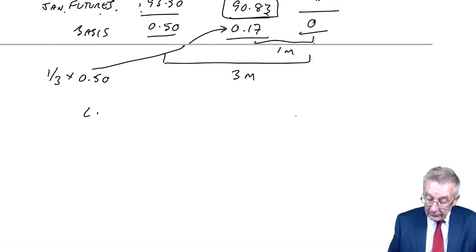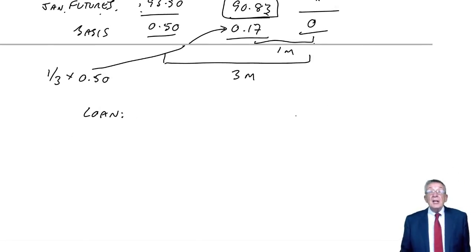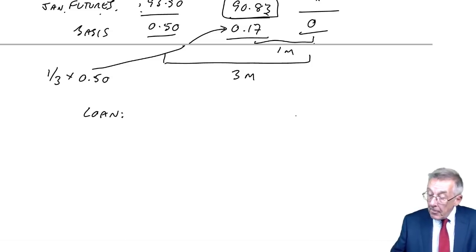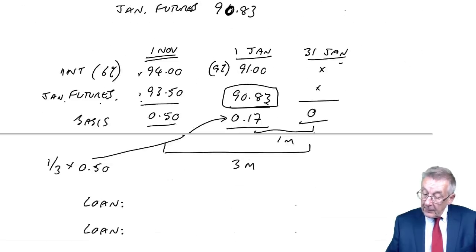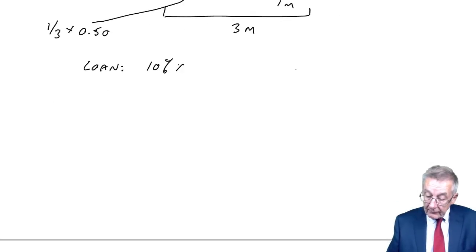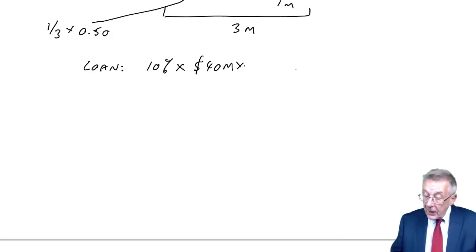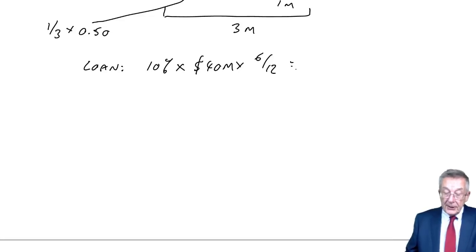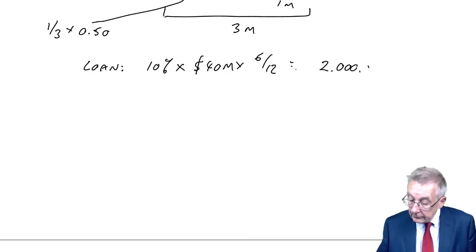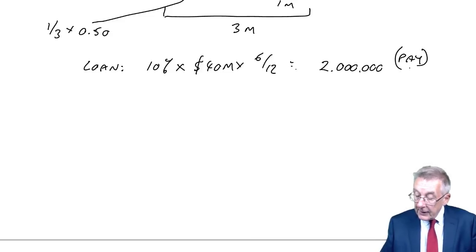First of all the loan. We left the loan at risk, so we pay whatever the interest happens to be. Barbara pays 10%. The loan was 40 million. Interest rates are always annual rates. The loan is for six months, so the interest will be 6 twelfths of the annual interest. So 40 million times 10% times 6 twelfths equals 2 million. We're paying interest, that's how much we'll pay.